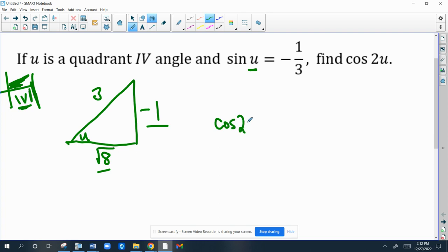So cosine of 2U is cosine squared U minus sine squared U. So now we have to figure out what cosine of U is. Well, here's U. The cosine of that angle is adjacent over hypotenuse. So root 8 over hypotenuse. And I'm going to square that.